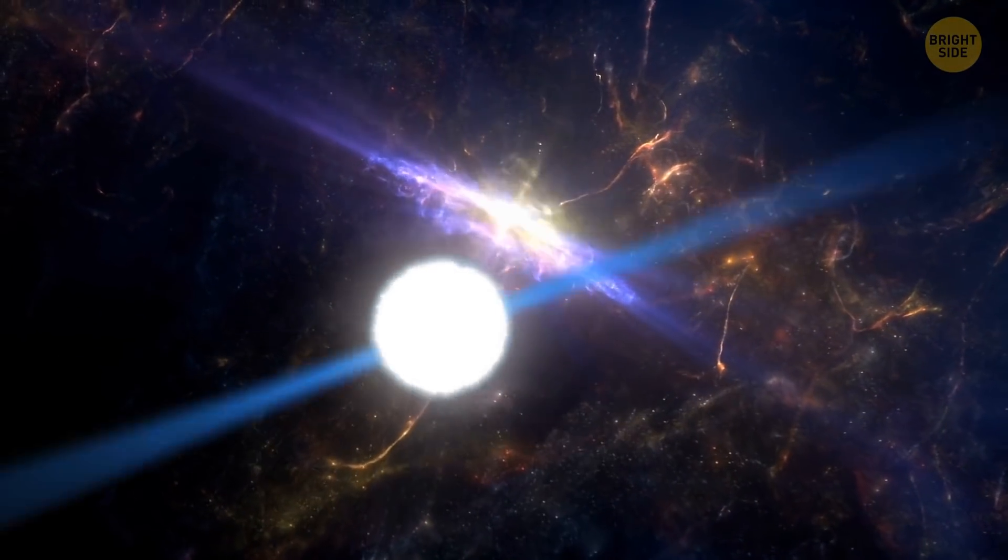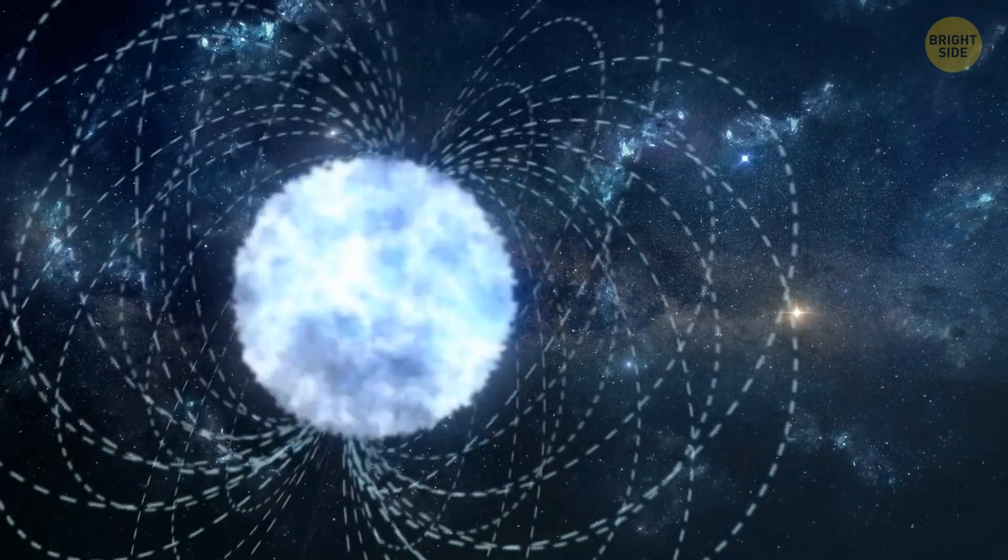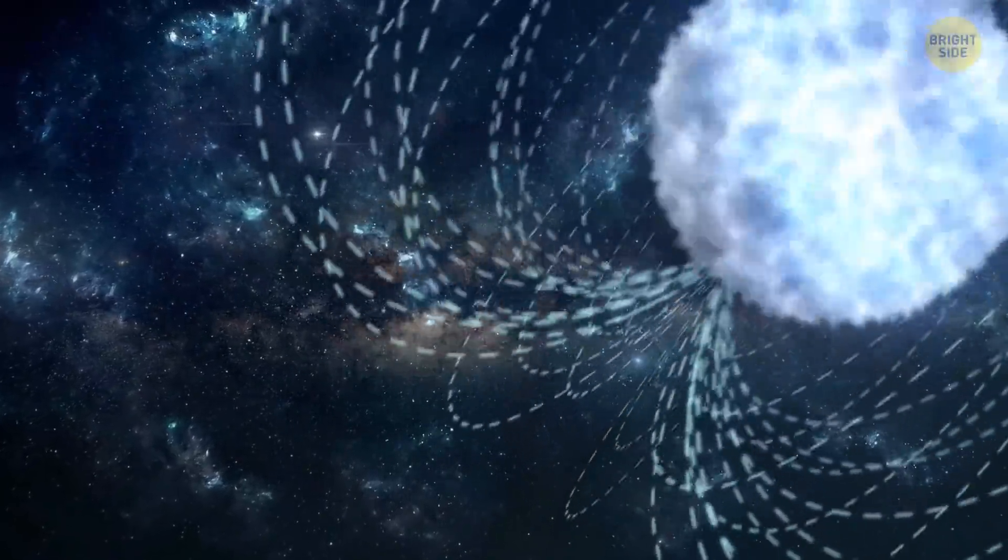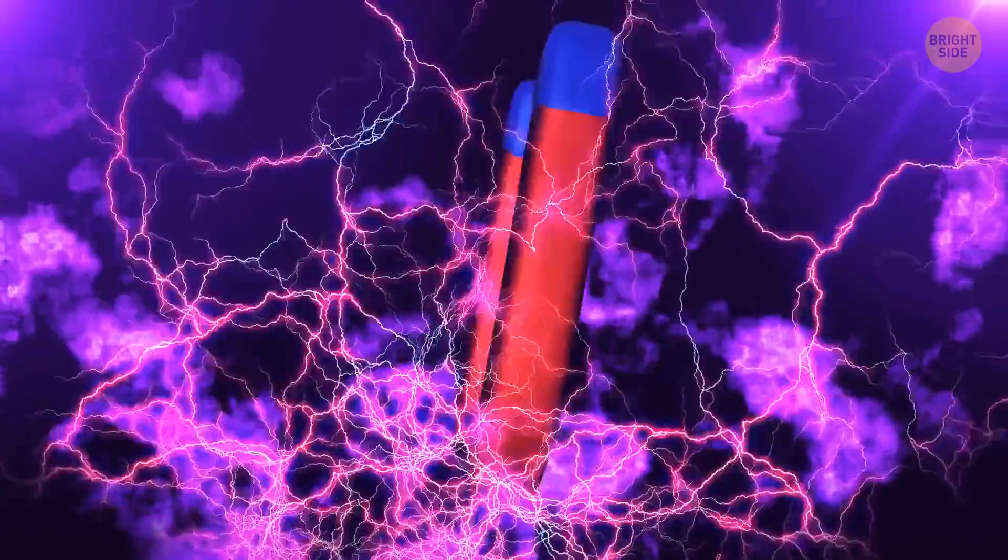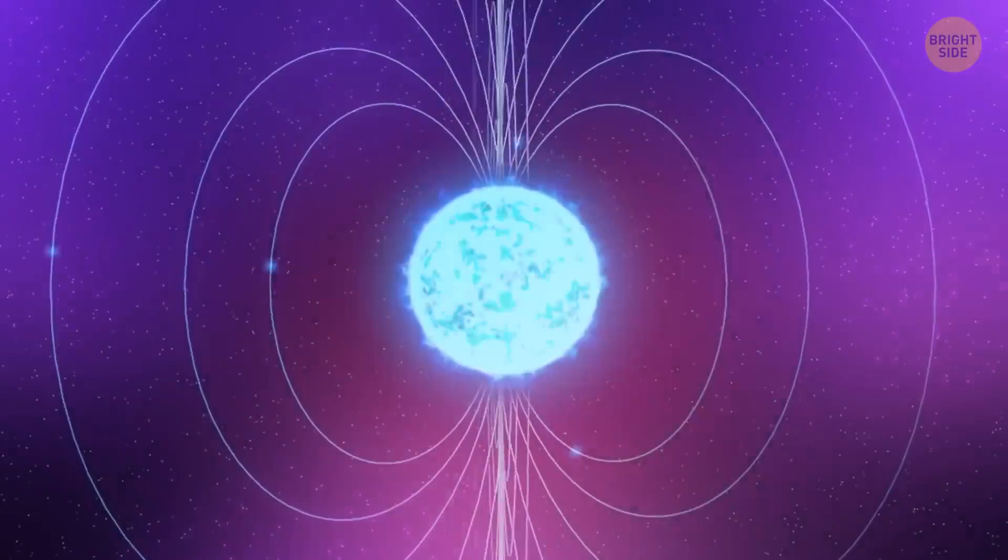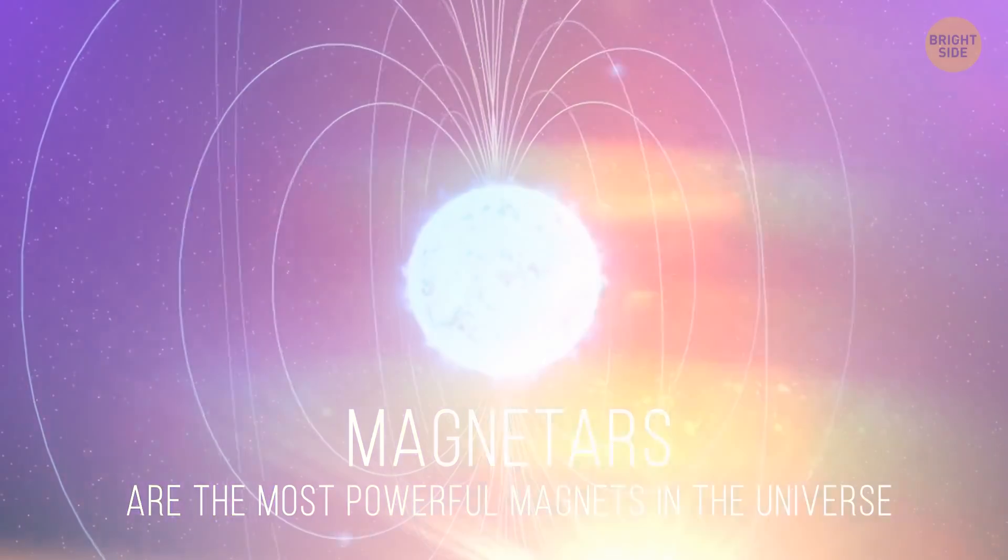But if neutron stars are bizarre and spooky, magnetars are too. Perhaps even more so. Thanks to their incredible magnetic pull, these stars would win in the strongest magnetic field competition, hands down. To put it simply, magnetars are the most powerful magnets in the universe. Their magnetic fields can seriously mess with the neighborhood.